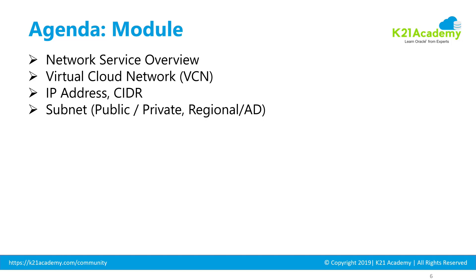Within subnets there are different types: public subnet and private subnet. What do they mean? Why do you create a public or private subnet? In what scenario would you designate a subnet as public or private? Then we'll also look at different types of subnet — regional subnet and availability domain-specific subnet. Which one do you need to pick? What is Oracle's recommendation and why do you need to pick regional?